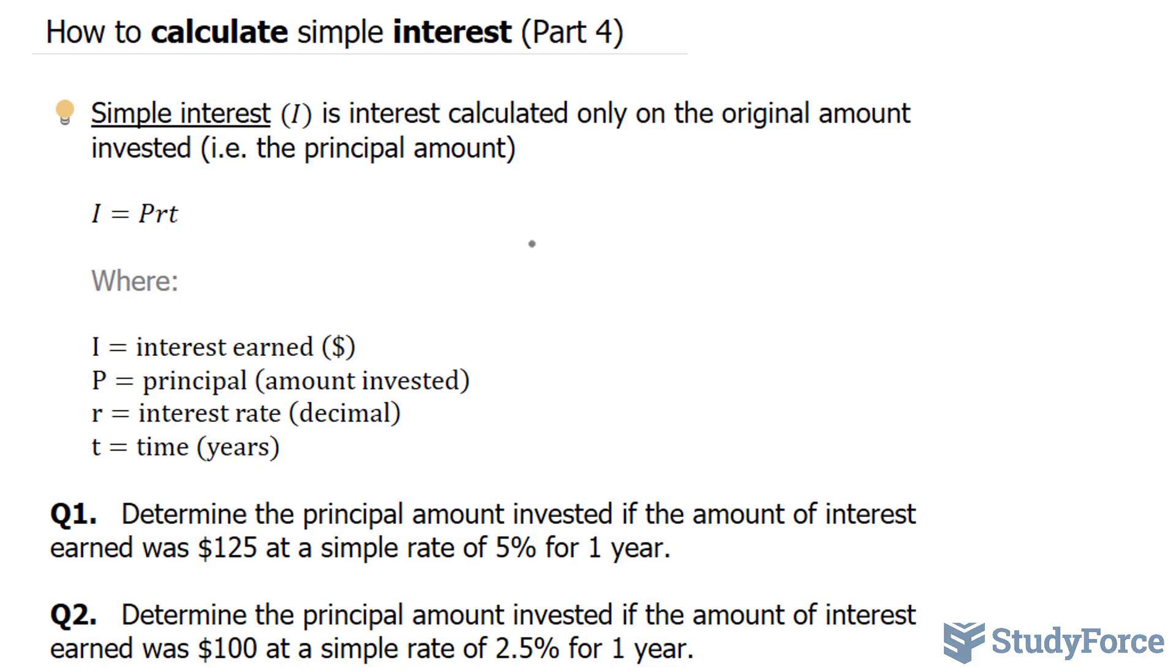So let's write down everything we know. We know that i is equal to $125. Principal is what we're looking for, so I'm going to put a question mark beside it. The rate is 5%, so that's equivalent to 0.05 as a decimal, and t is one year.